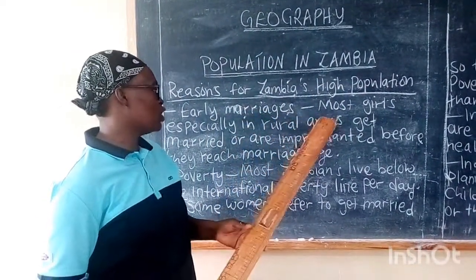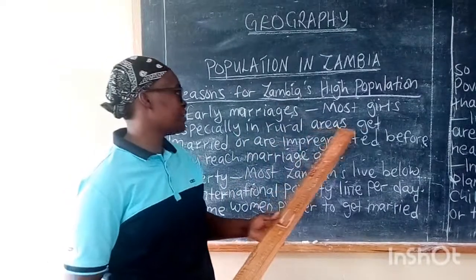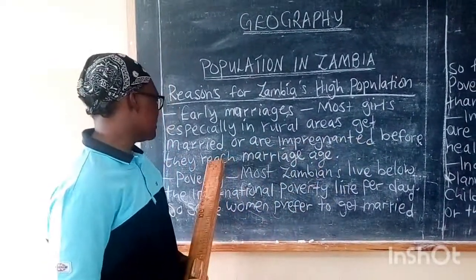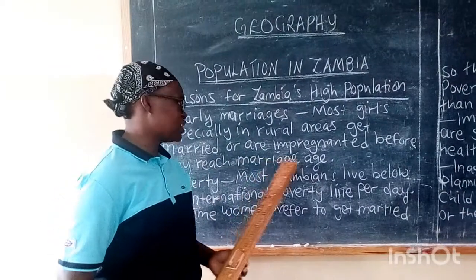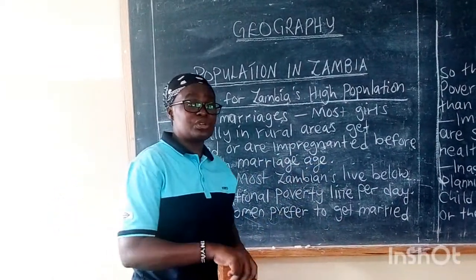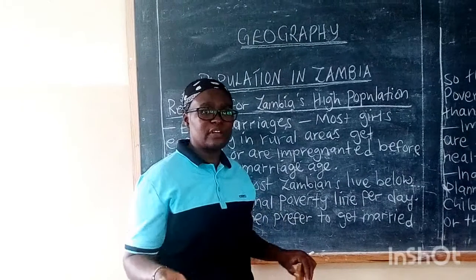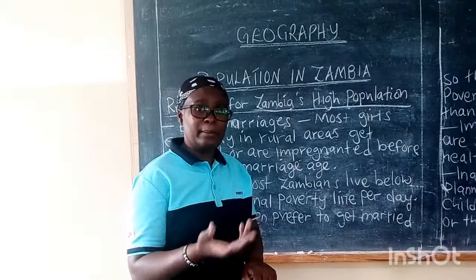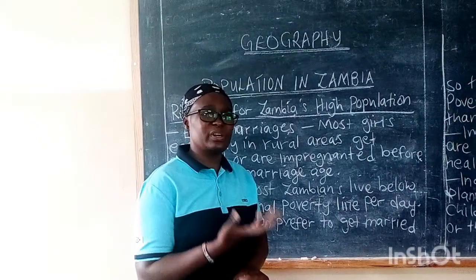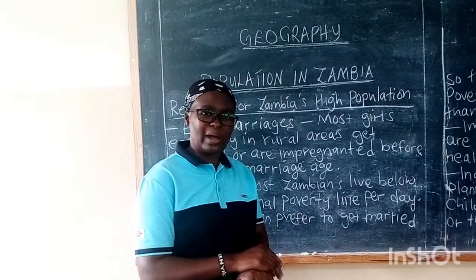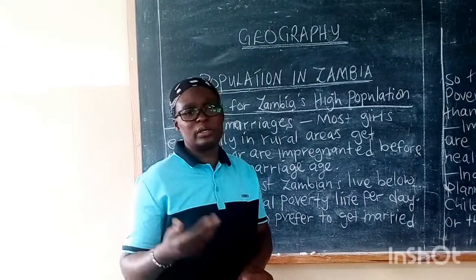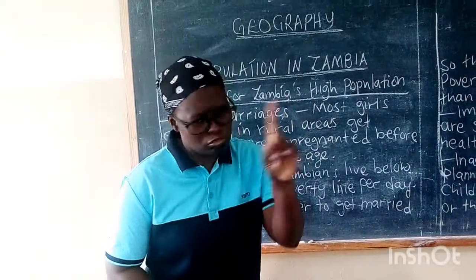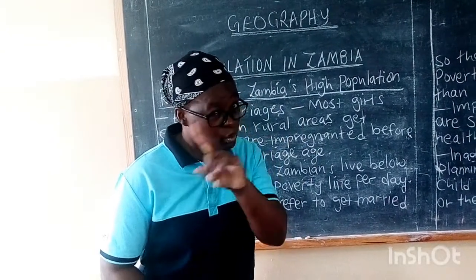One reason is early marriages. Most girls, especially in rural areas, get married or are impregnated before they reach marriage age — some as young as 12 or 13. When they are married or impregnated, they add to the number of people in the country. Marrying a child at a tender age is something we should not allow.